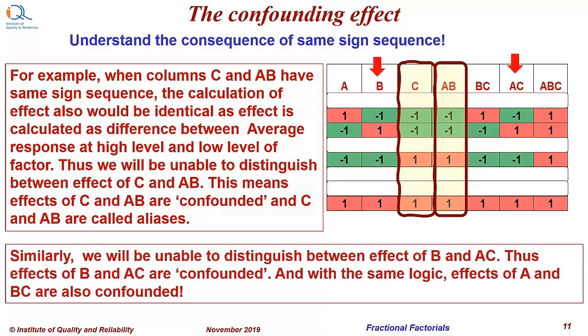Similarly, we will be unable to distinguish between the effect of B and AC as the sign sequence is identical in these two columns. Thus, the effect of B and AC are also confounded. And with the same logic, effects of A and BC are also confounded.